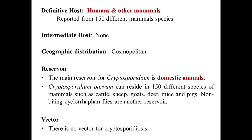There is no intermediate host and distribution is cosmopolitan. The main reservoir is domestic animals — Cryptosporidium parvum can reside in 150 different species of mammals such as cattle, sheep, goats, deer, and mice. Non-biting cyclophane flies are another reservoir which should be kept in mind.